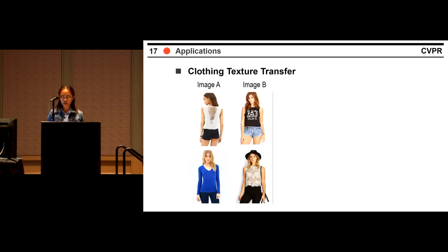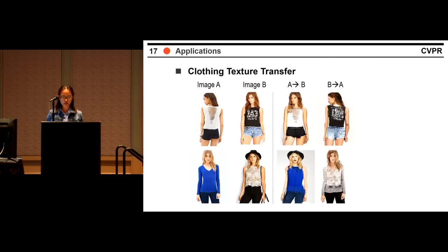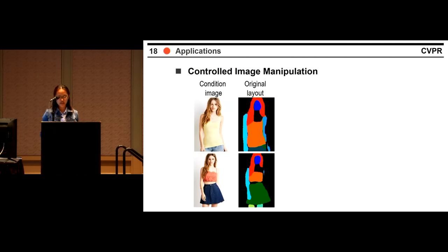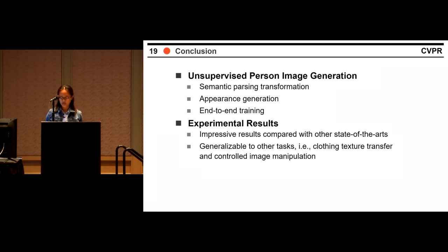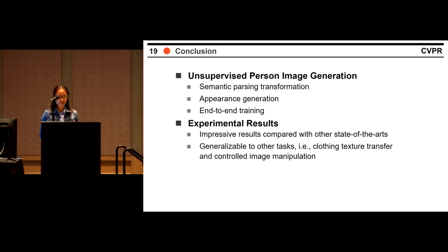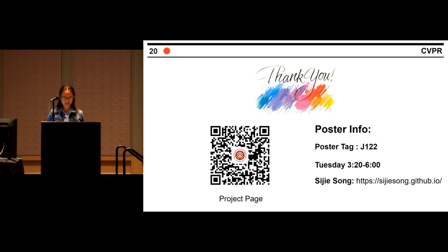Our model can be applied to clothing texture transfer, where we show bidirectional transfer results. Another application is controlled image manipulation: by modifying the semantic maps, we can change the sleeve length of the girl or change a skirt to pants. To summarize, we decompose unsupervised person image generation into semantic parsing transformation and appearance generation. Our model is end-to-end trainable for better results and can be applied to clothing texture transfer and controlled image manipulation.